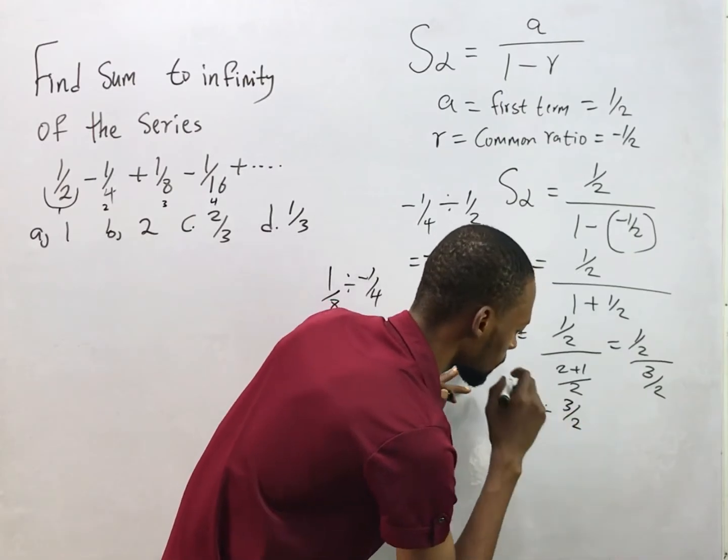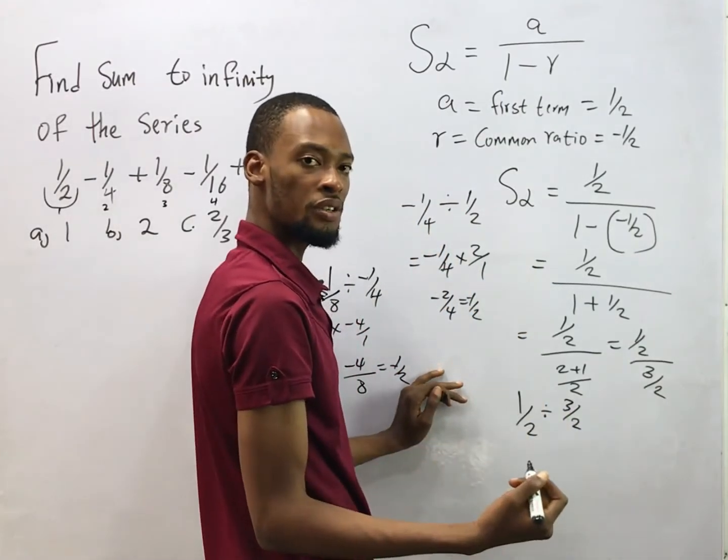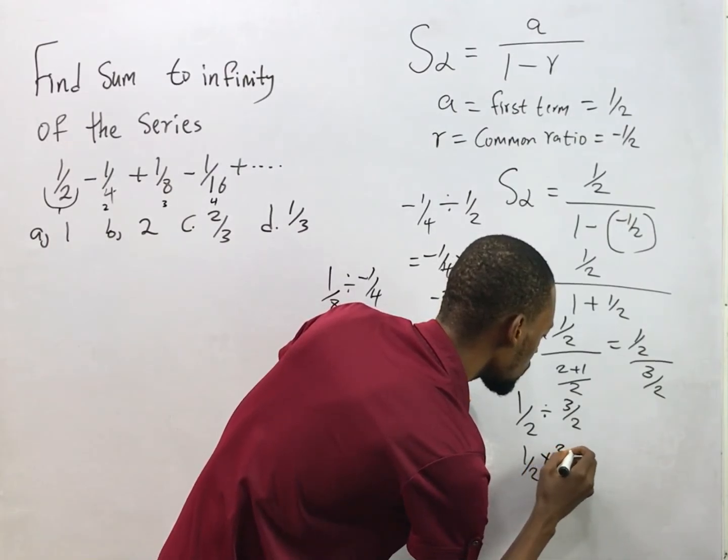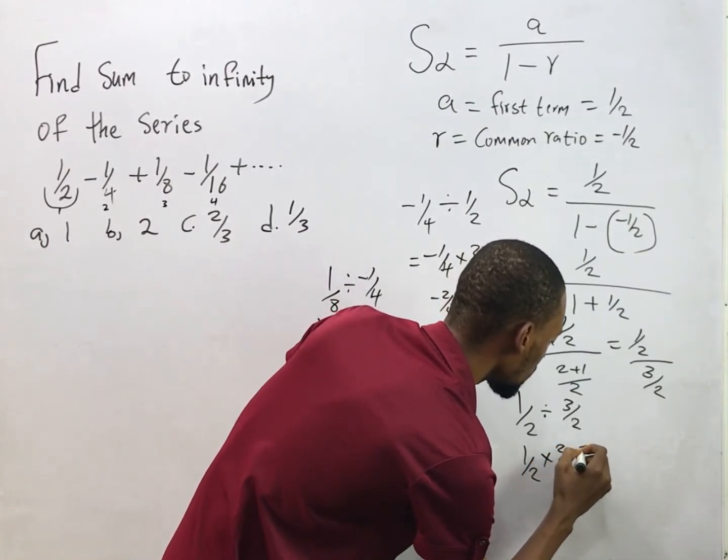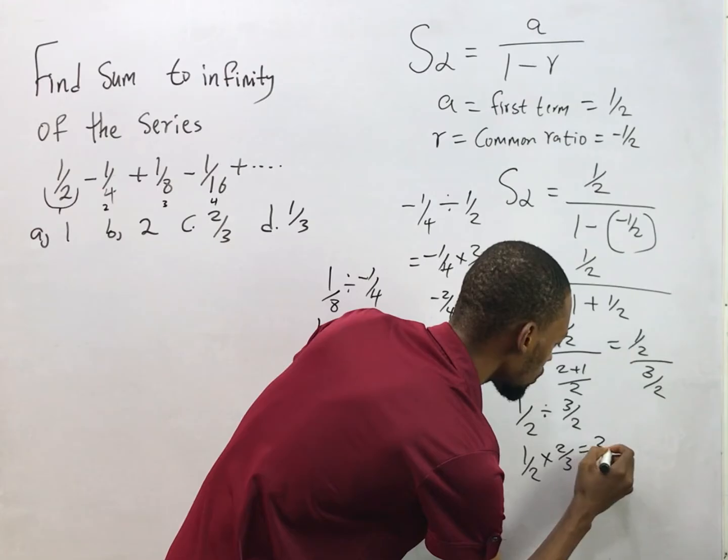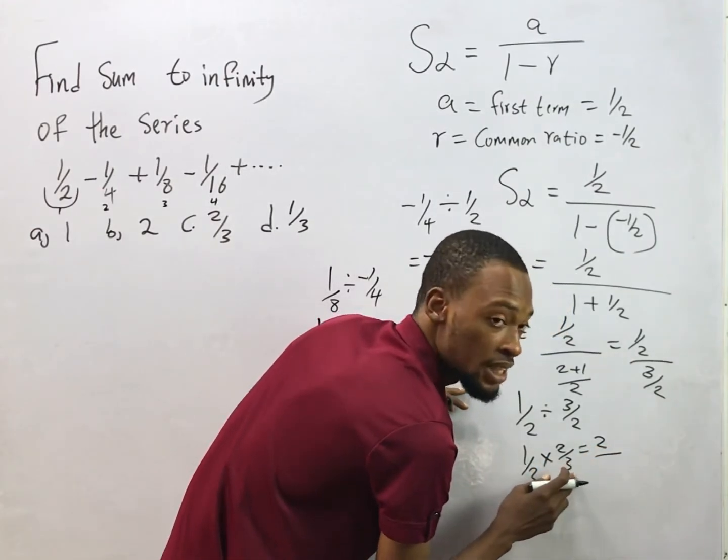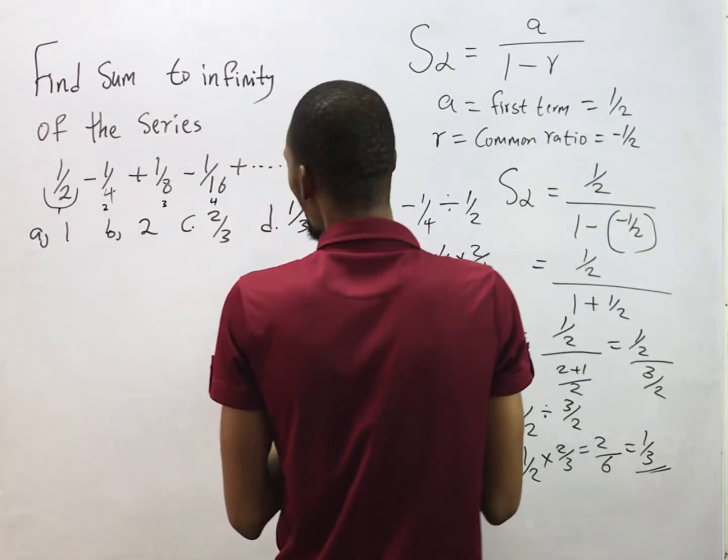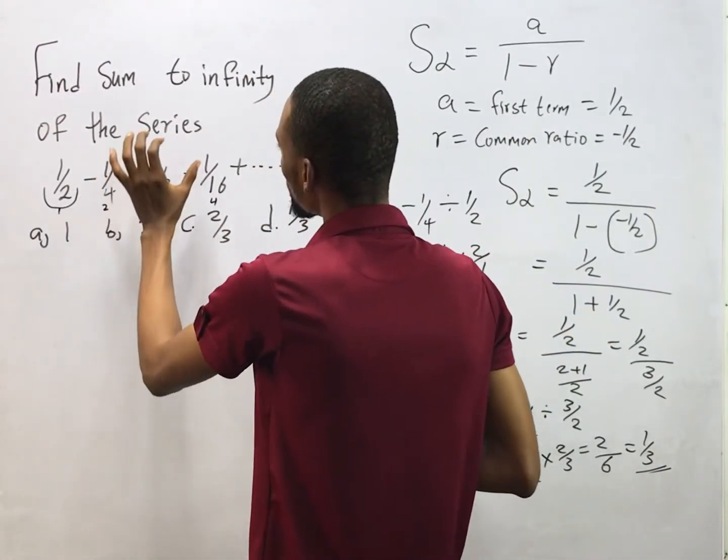To make this division easier, you can simply say 1/2 divided by 3/2, then change to multiplication to have 1/2 times 2/3. This will give you 1 times 2 is 2, 2 times 3 is 6.